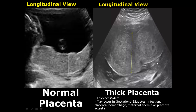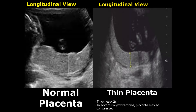A thick placenta will have a thickness of more than four centimeters and can occur in many conditions such as gestational diabetes, infections, placental hemorrhages, maternal anemia, or placenta accreta. In the setting of severe polyhydramnios, the placenta can be compressed and have a thickness falling below two centimeters — that is a thin placenta. A thin placenta can also occur with diabetes and hypertension.